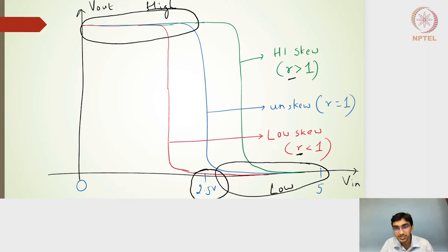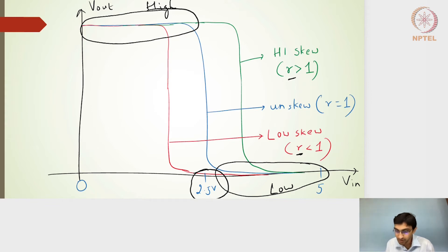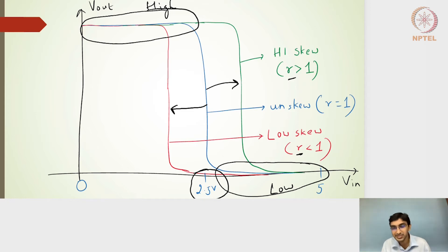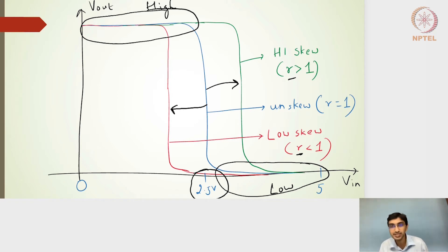For an unskewed inverter, the threshold voltage is 2.5 volts. For a high skew, the threshold voltage is above 2.5 volts. For a low skew, the threshold voltage is below 2.5 volts. For a low skew, the transfer characteristics are shifted towards the left. For a high skew, the transfer characteristics shift to the right. The transition region is controlled by whichever transistor — NMOS or PMOS — is more dominant. The PMOS pushes the transition region to the right; the NMOS pulls it to the left.